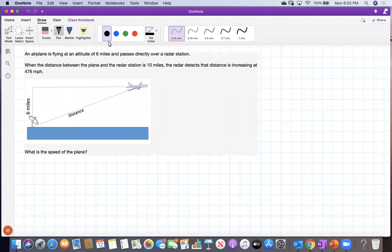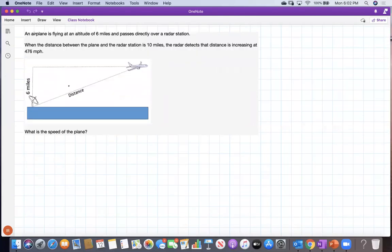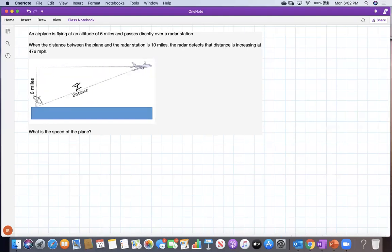First, let's label the distance between the radar and the plane with z. The distance from the plane to the radar, horizontally speaking, x. And the altitude, since it's constant, will be just six miles.